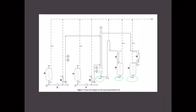Next, close valves HV2, HV07, HV12, HV14, HV18, HV19, HV22, and HV24. The last step is to turn off the main switch at the control panel.